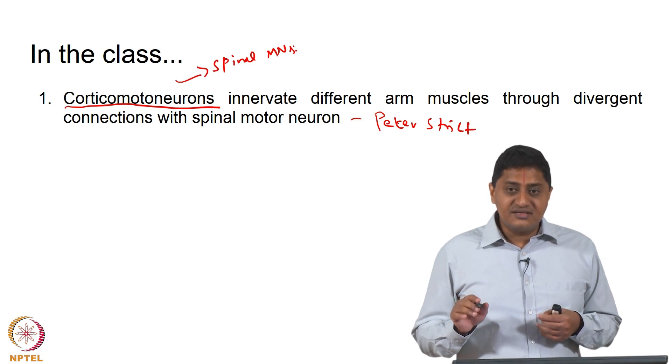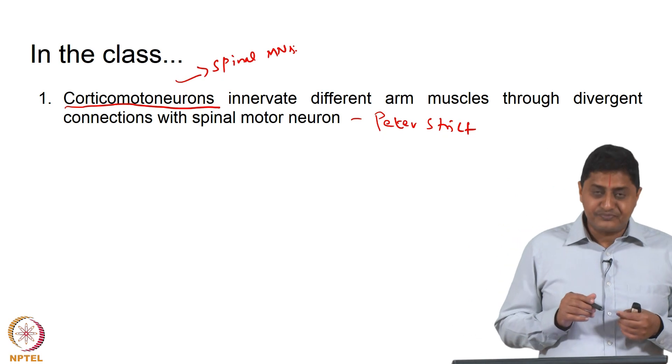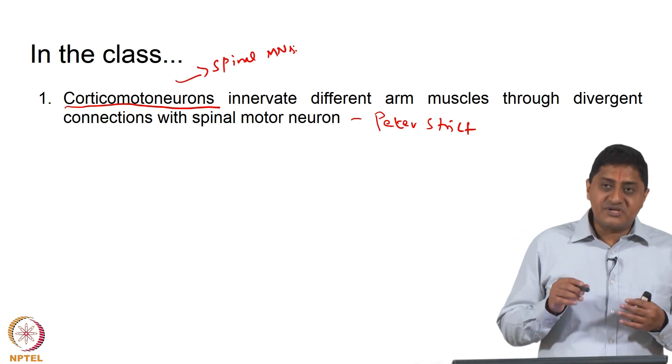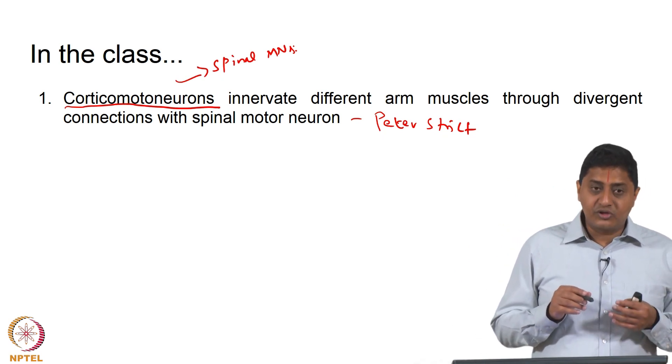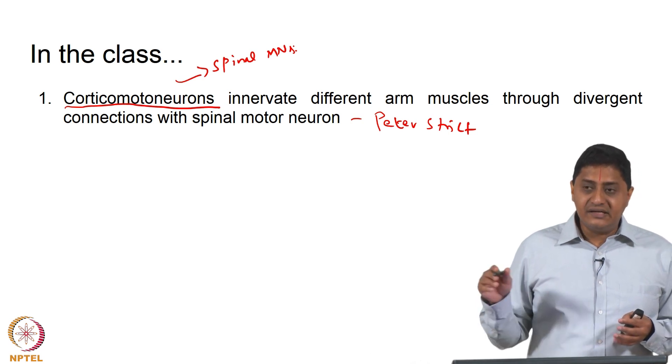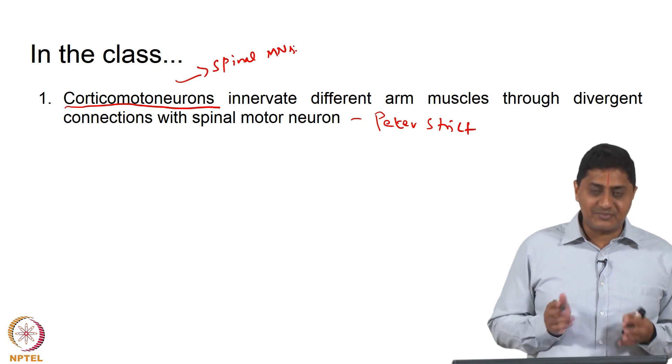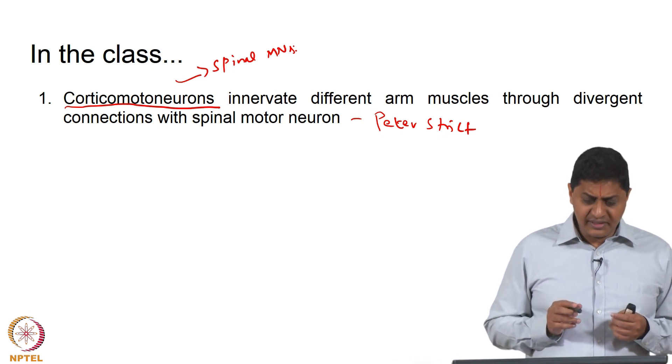In primates this number increases. For example, in macaques there is a substantial number of motor neurons in the primary motor cortex that project directly to the alpha motor neuronal pools in the spinal cord.